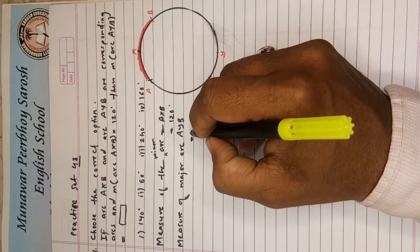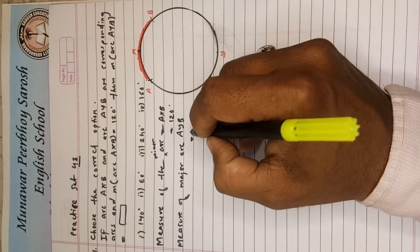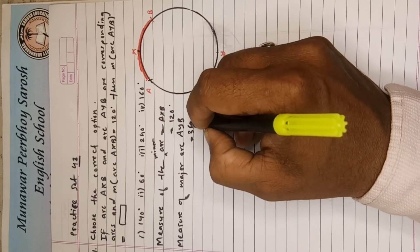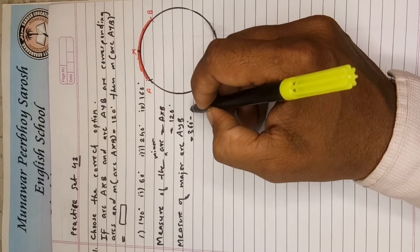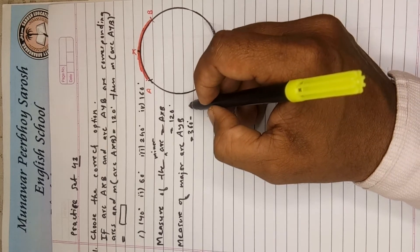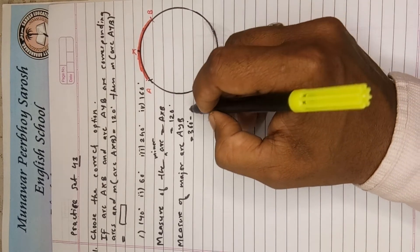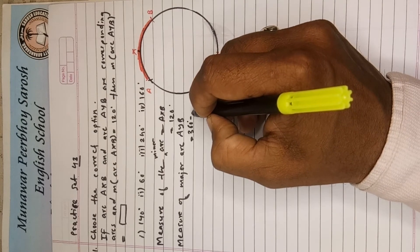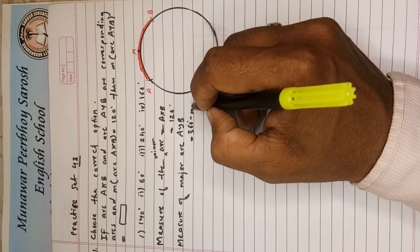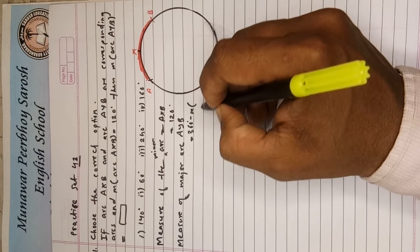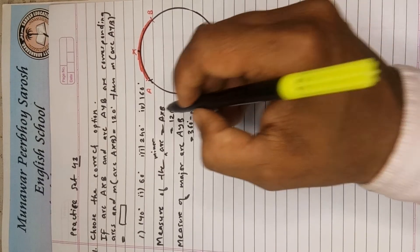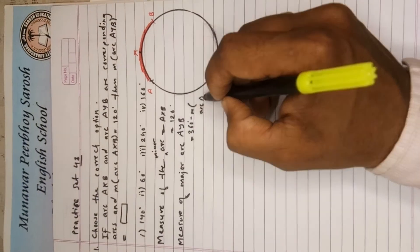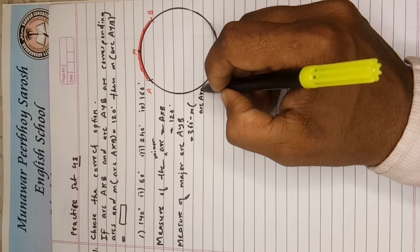AYB is equal to, you have to minus it from 360 degree minus measure of the minor arc. I write here now: measure of the arc, which one arc? AXB.